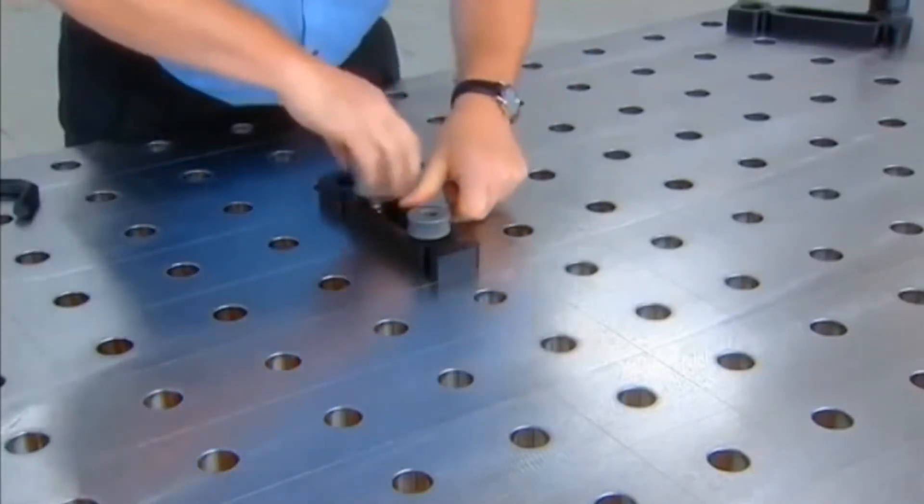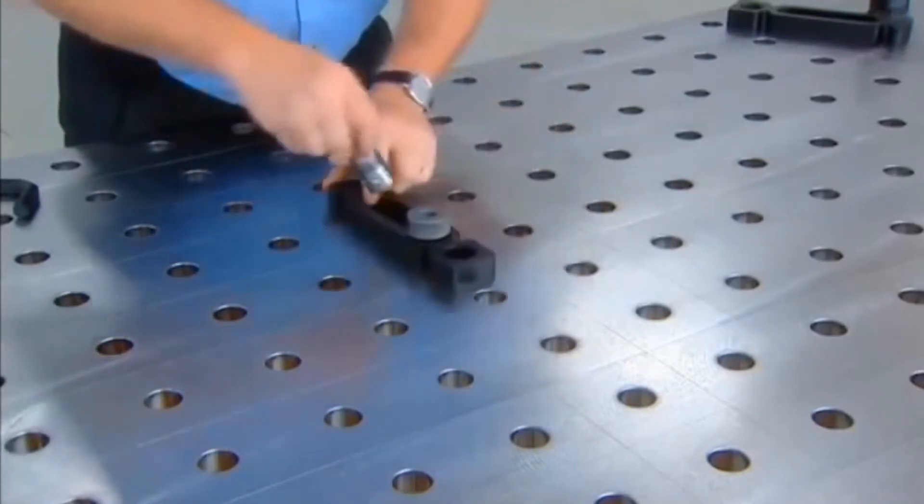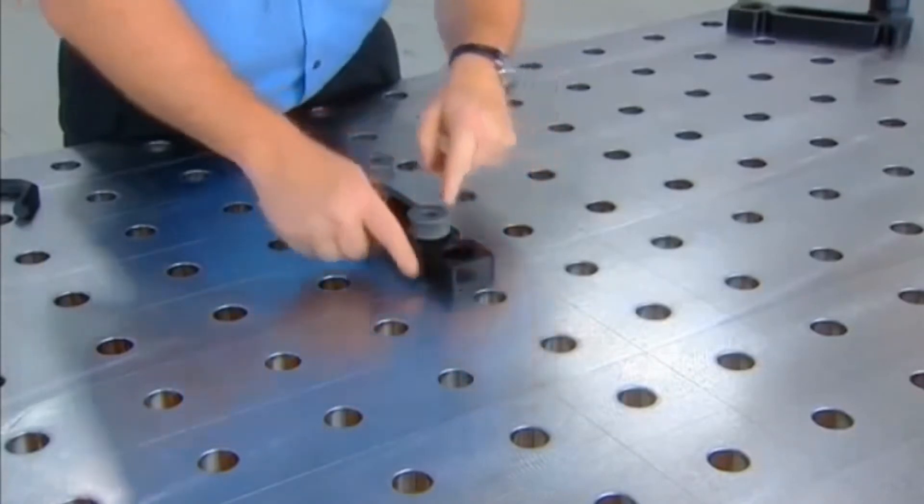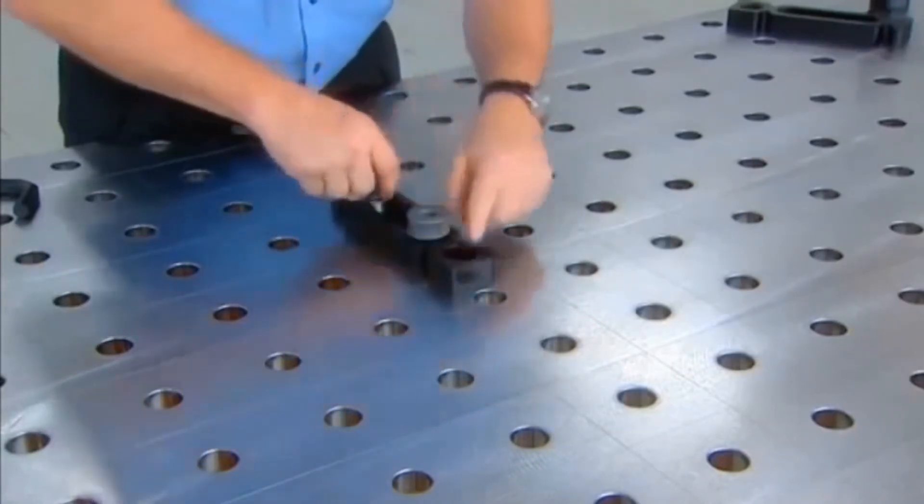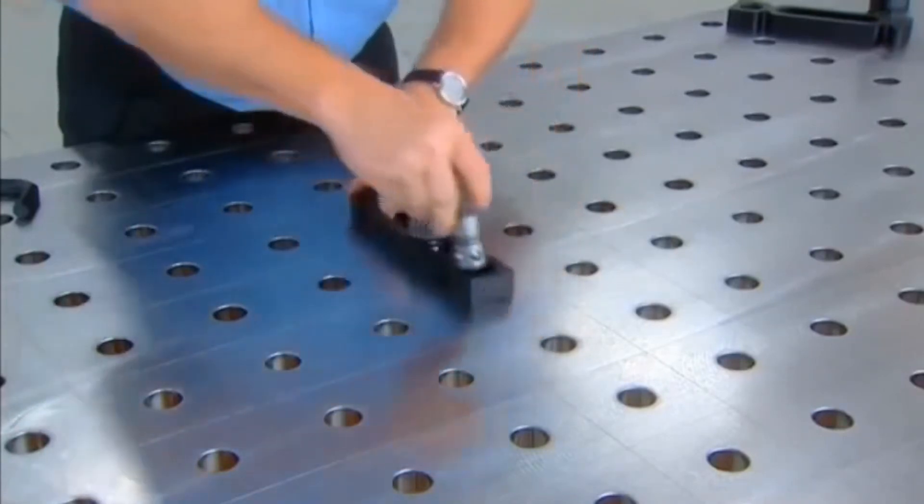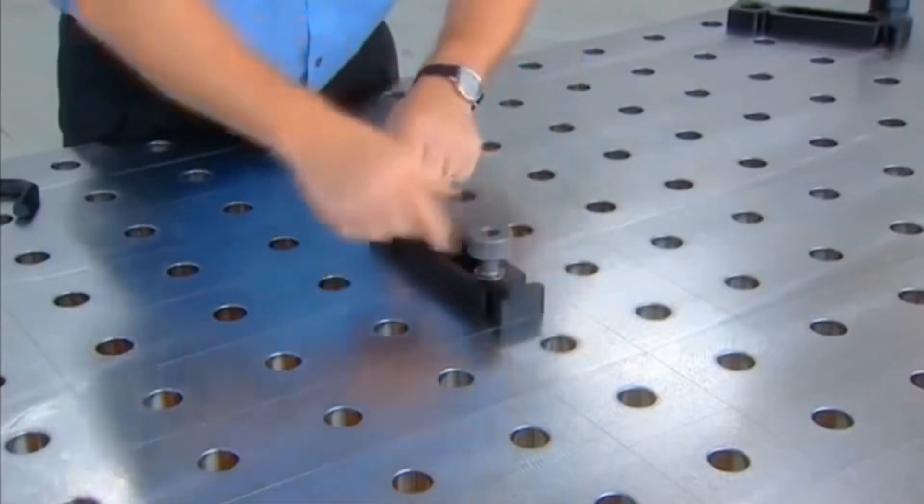To get another measurement other than the 100mm, you can turn this round and you've got 25mm. So that's 525, 550, 575, 600mm.